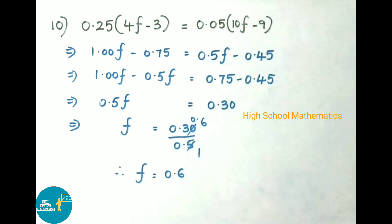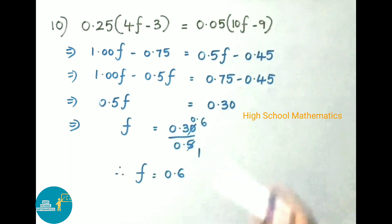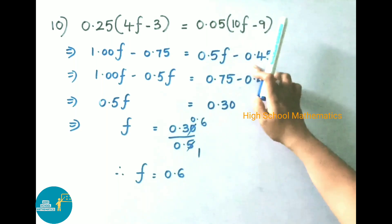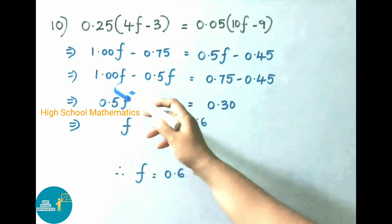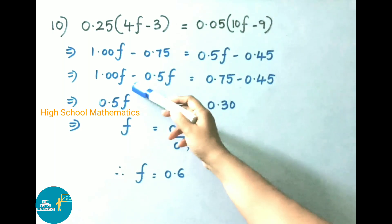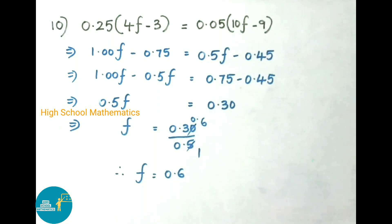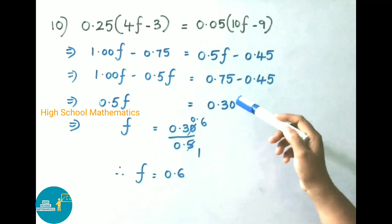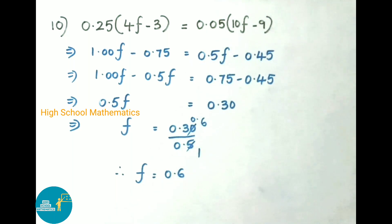Forget about the decimal: 5 into 9 is 45, and with 2 decimal digits that gives 0.45. Next step: 1.00f, and transposing the plus 0.5f gives minus 0.5f, equals — transposing the minus 0.75 gives plus 0.75 minus 0.45.